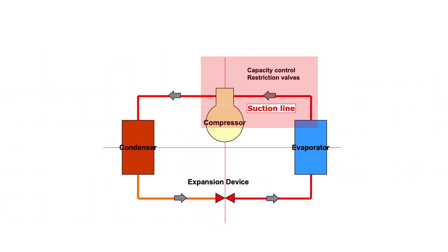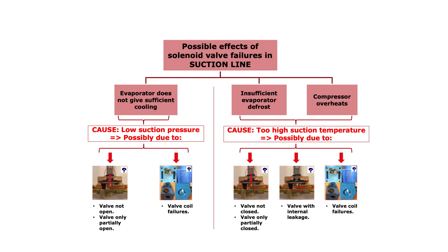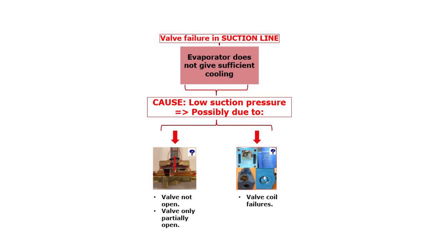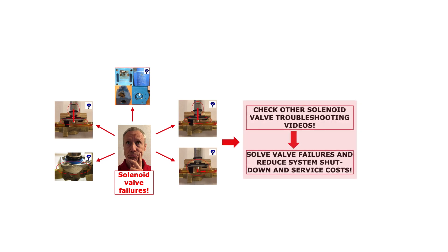Looking at the suction line as illustrated here, you normally use solenoid valves for capacity control and restriction. Here you see an overview of how possible solenoid valve failures might affect the refrigeration system when the valve is located in the suction line. The evaporator does not give sufficient cooling — caused by too low suction pressure due to the valve not opening or only being partially open, or the valve coil is not working correctly. Insufficient evaporator defrost and or compressor overheats — caused by too high suction temperature due to the valve not closing or only being partially closed, the valve is internally leaking, or the valve coil is not working correctly. Check out the other online solenoid valve troubleshooting videos to get more details and how to solve them to efficiently reduce system shutdown and service costs.